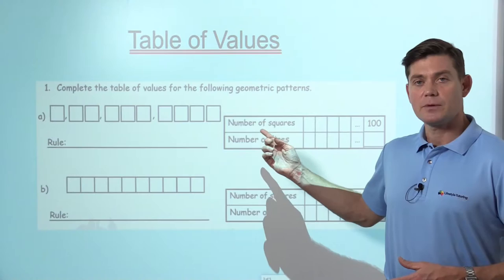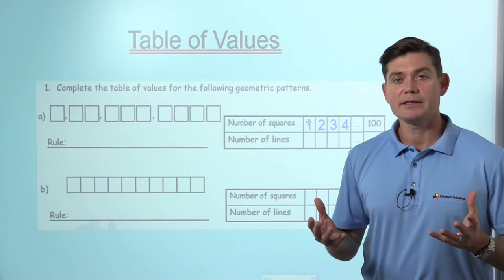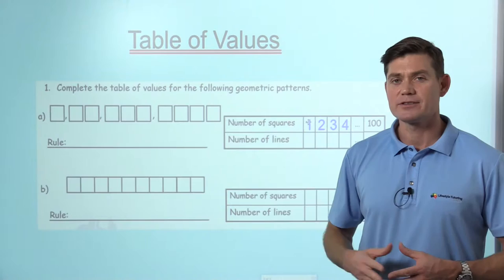It's got a title, number of squares. So we can see there, it starts with one square, then it goes to two, to three, and to four. So we can start by putting that in. It then asks us how many lines are in each pattern, each section of the pattern.